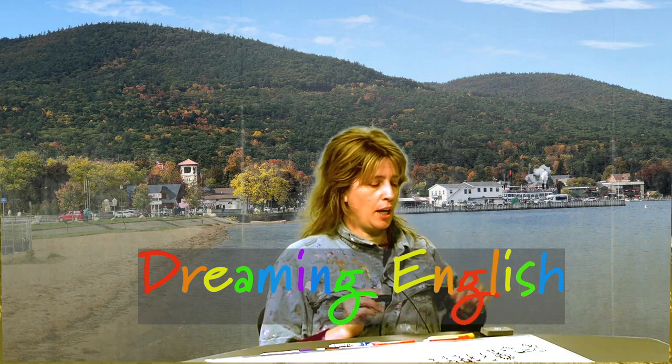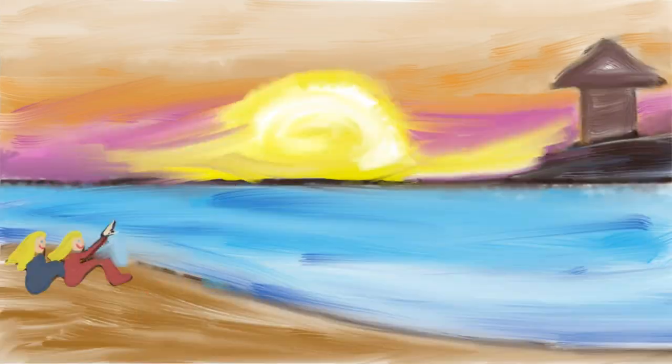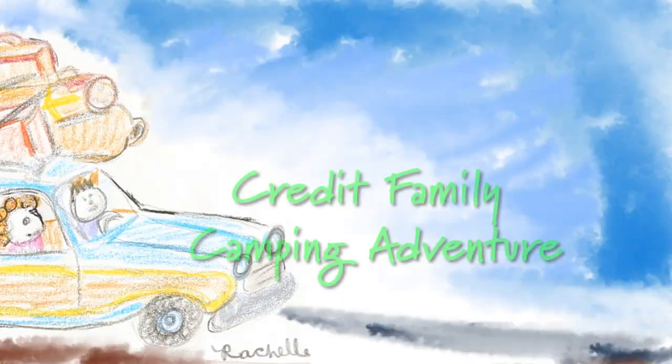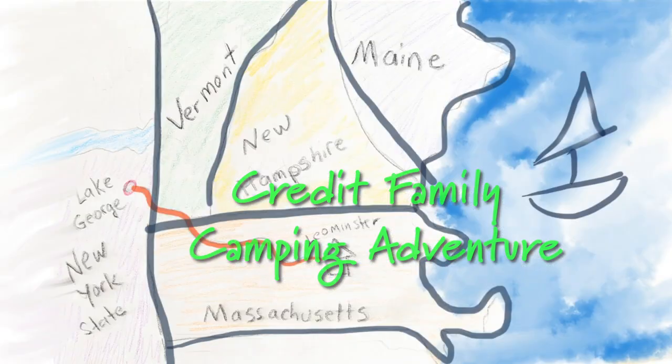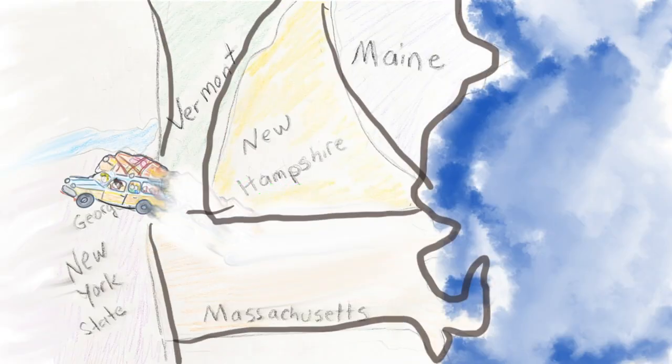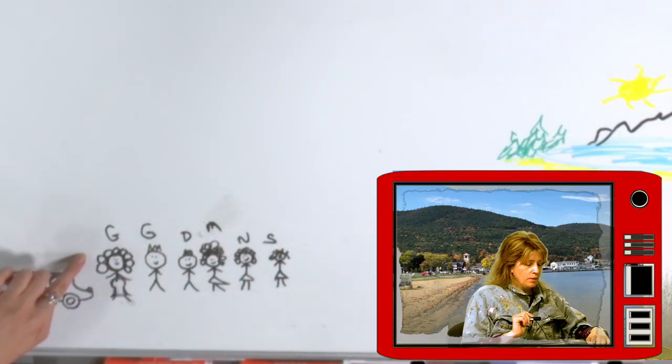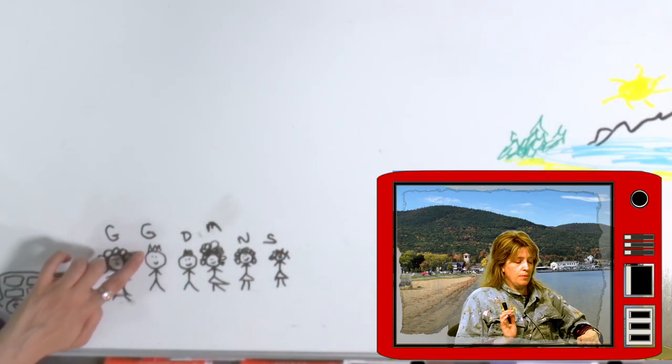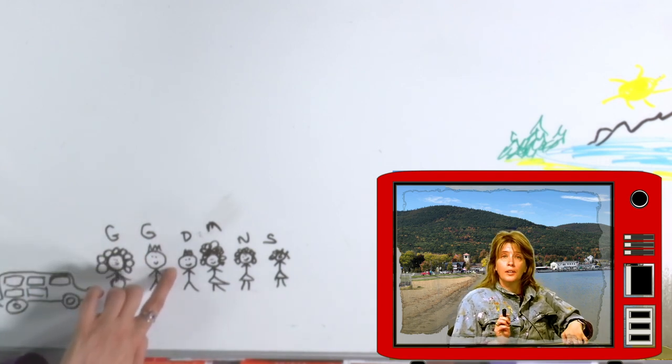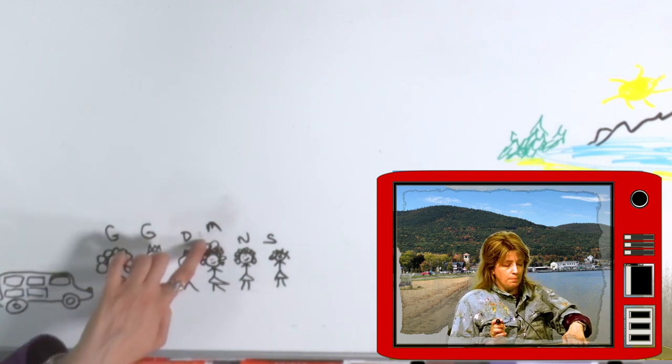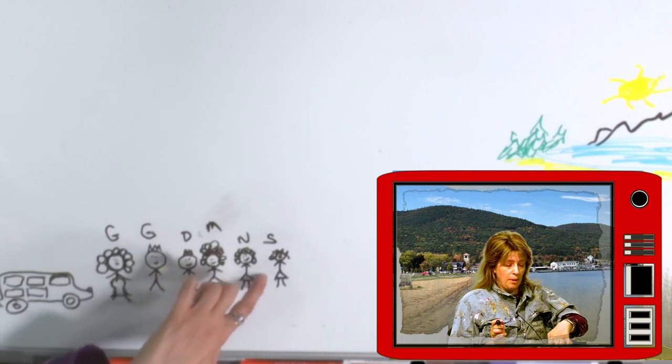So my grandparents at the time... This is my grandmother and my grandfather. And then they had my Uncle Dennis. This is my mom, and this is my Aunt Nancy, and my Aunt Sharon. And my grandmother at the time was pregnant with my Aunt Mary.